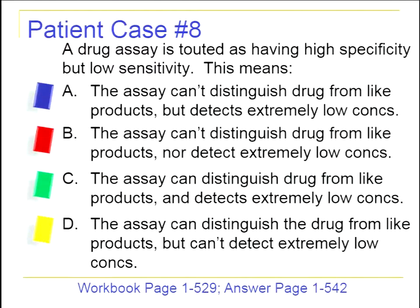Patient case 8 on page 529: a drug assay is touted as having high specificity but low sensitivity. What does that mean? Options: it cannot distinguish drug from like products but can detect very low concentrations; it cannot distinguish like products and cannot detect low concentrations; it can distinguish like products and detect low concentrations; or it can distinguish like products but cannot detect very low concentrations.